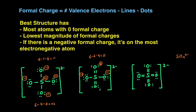If there's a formal charge of zero, you don't necessarily have to label it — I'm just labeling it here for you guys to see. And then for the sulfur, sulfur has six valence electrons minus the number of lines, which is six, and then no lone electrons, giving it a zero formal charge as well.